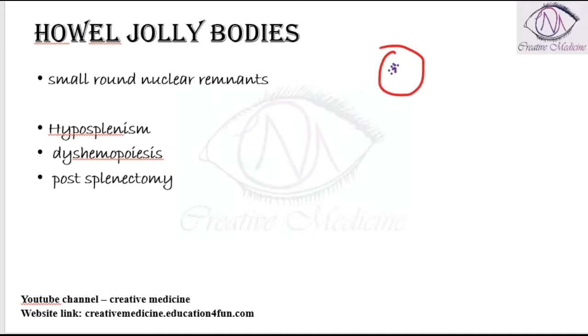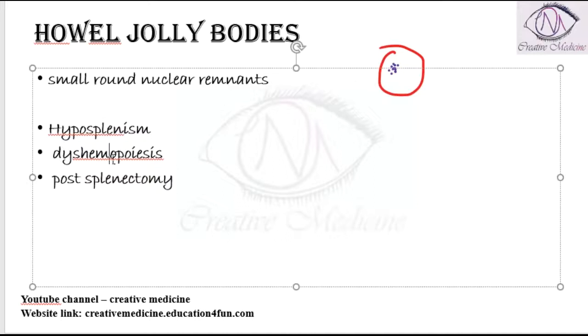These Howell-Jolly Bodies are mainly seen in conditions like hyposplenism, dyshemopoiesis, and post-splenectomy conditions.